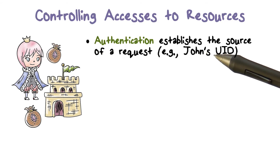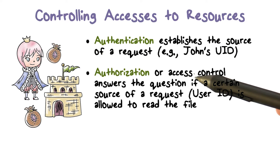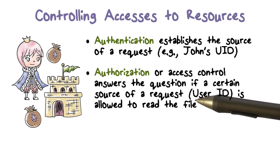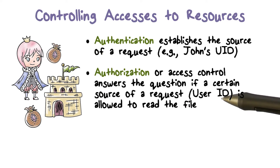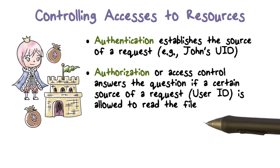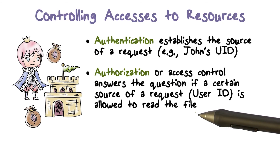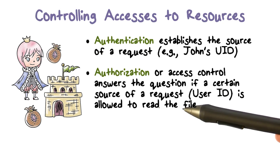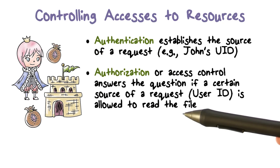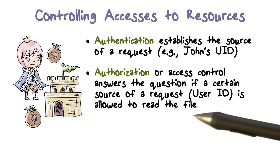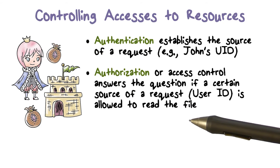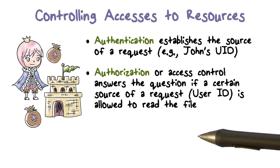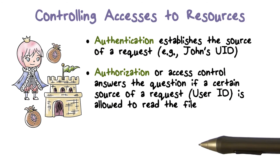Authentication tells us about the source. Authorization, or access control, which is the topic for this lesson, answers the question: knowing the source of a request — which authentication tells us — and the target of the request, which is a file, and what they want to do with it, should we let them do it or not? Access control is similar to what we have in the real world: you want to access something, and somebody — in this case the TCB, or the reference monitor implemented by the TCB — decides whether that access should be allowed to proceed or not.